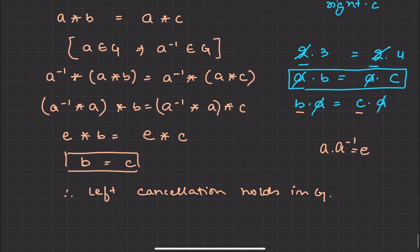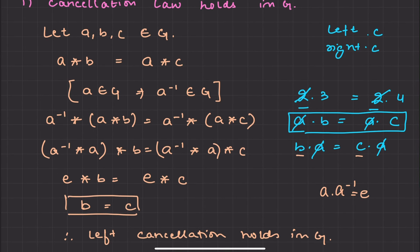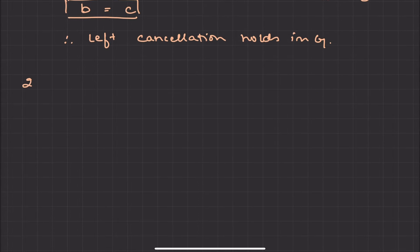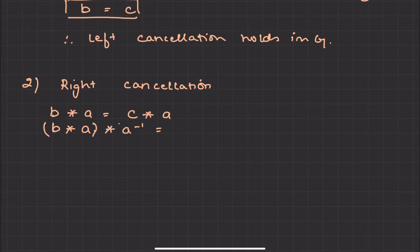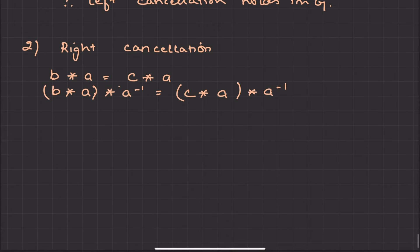Now similarly, we have to do this on the right side — this is right cancellation. In right cancellation, we start with b operation a is equal to c operation a. Now we will operate with a-inverse on the right side of both sides. So we get: b operation a operation a-inverse is equal to c operation a operation a-inverse. Using the associative property, we can group these.